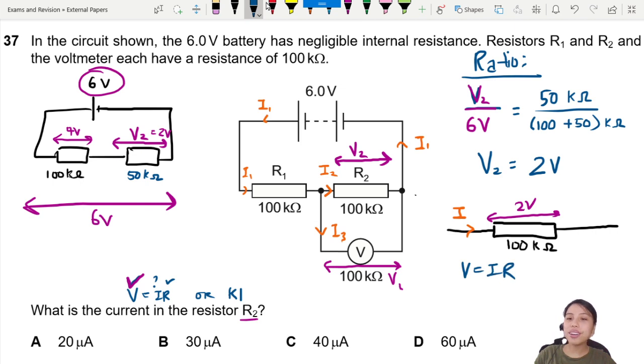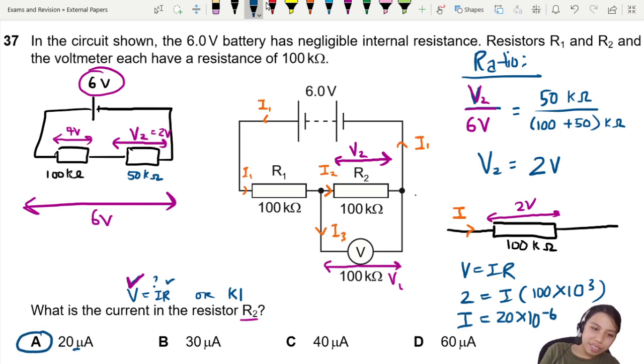V equals to IR. This is 2 equals to I times 100 times 10 to the 3. This will give a current of 20 times 10 to the negative 6. So this is going to be micro amps. Mu is negative 6. This is the correct prefix and it's 20. That's how you can find this one method to find the current through this resistor.